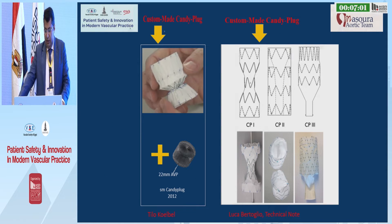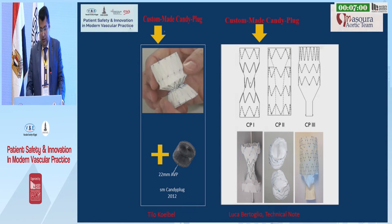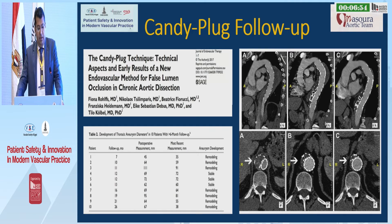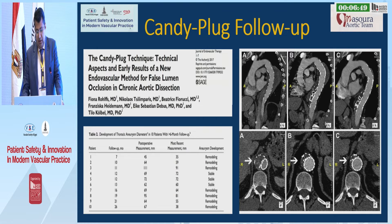This is how candy block one, two, and three look like. The candy block follow-up by Fiona from the Hamburg group shows that the true lumen increases in size during follow-up while the false lumen decreases in size.